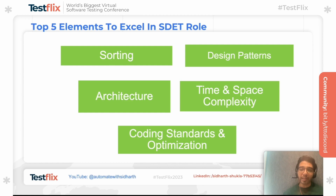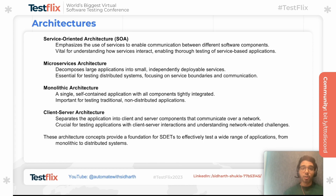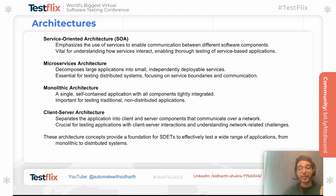When you want to excel in the SDET role, five additional things are very important: design patterns, architecture, sorting, and time-space complexity. For architectures, always target service-oriented architecture, microservice architecture, monolith architecture, and client-server. You should understand the difference between microservice and monolith because unless you understand them, it is difficult to implement proposed solutions to fill the gaps.